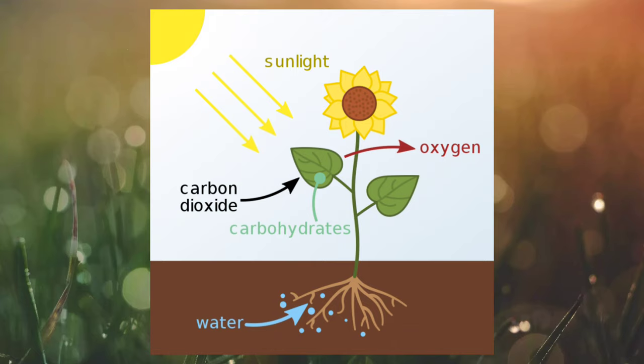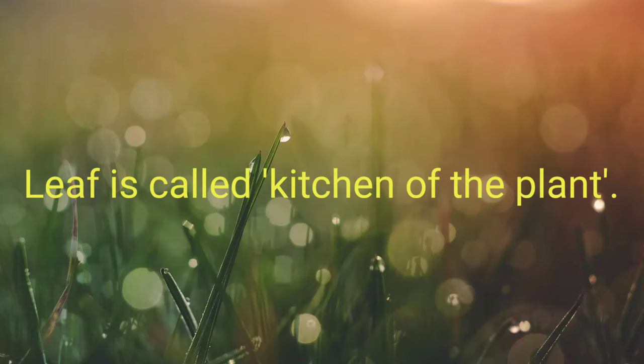The food prepared is transported to various parts of the plant and is also stored in various forms. The by-product oxygen is sent out through the stomata present in the leaves. So children, now did you understand why the leaf is called the kitchen of the plant? Yes, because it prepares the food.